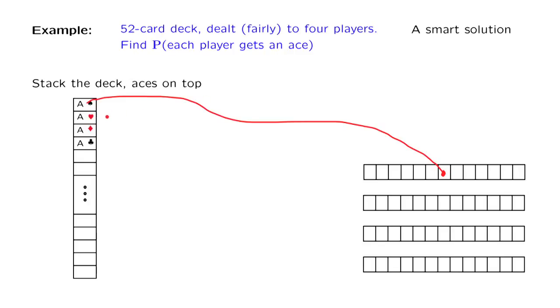Then we will take the second ace, send it to a random location, and so on. What we want to calculate is the probability that the four aces will end up in locations or in slots that are associated with different persons. So let us calculate this probability.